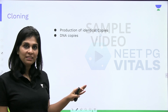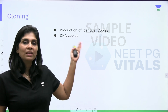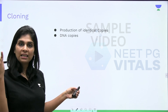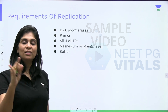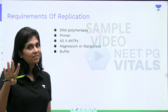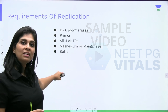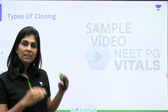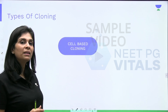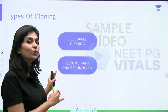For this replication there are a few requirements. What are the requirements? You need a DNA polymerase enzyme, primers, deoxynucleotide triphosphates, magnesium or manganese to act as a catalyst, and a buffer. Depending upon what provides all these requirements, cloning is of two types. If all these requirements are provided by a whole living cell like E. coli, then that is called cell-based cloning, which is nothing but recombinant DNA technology.